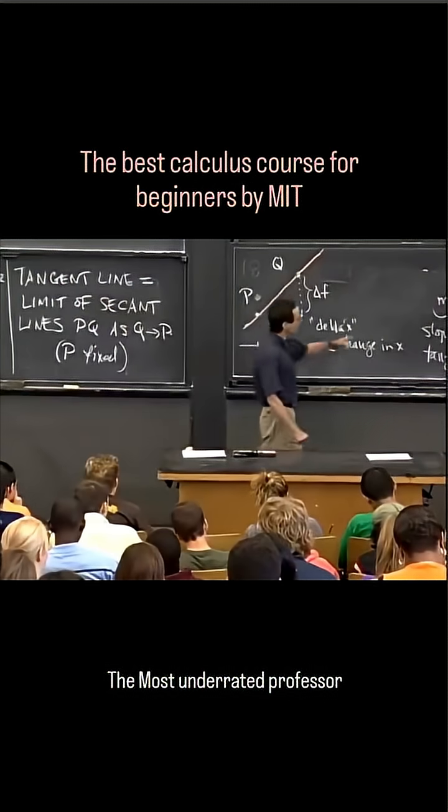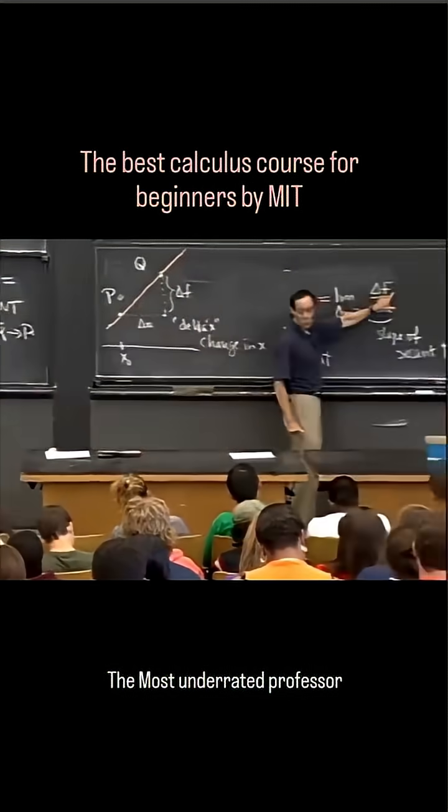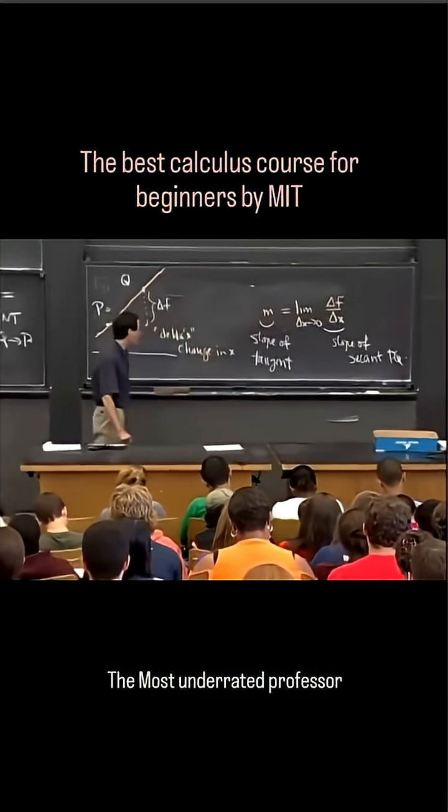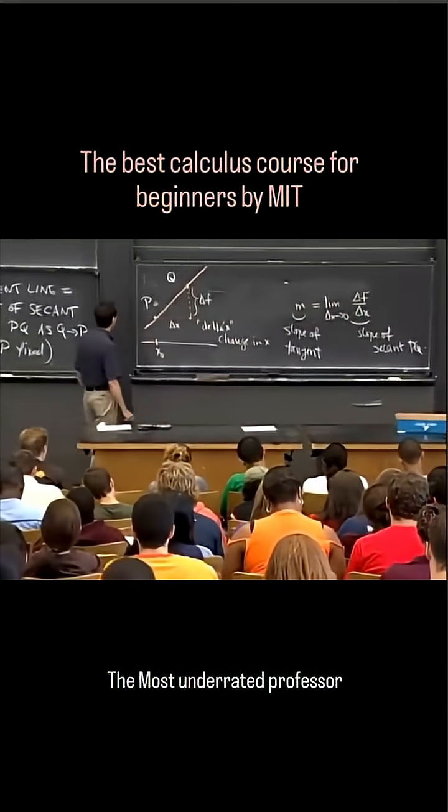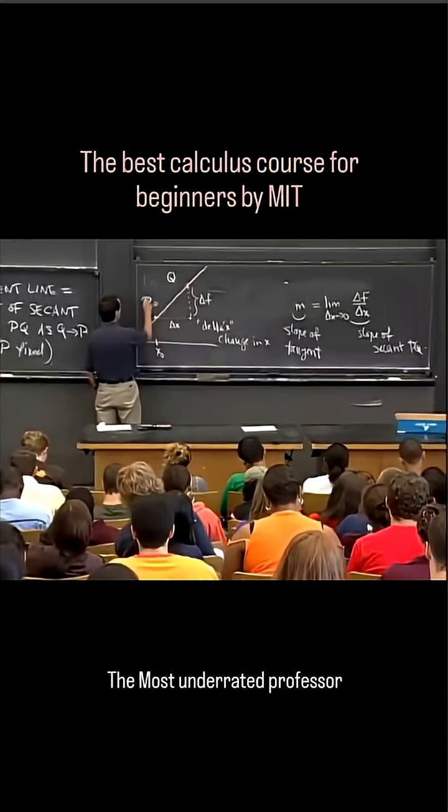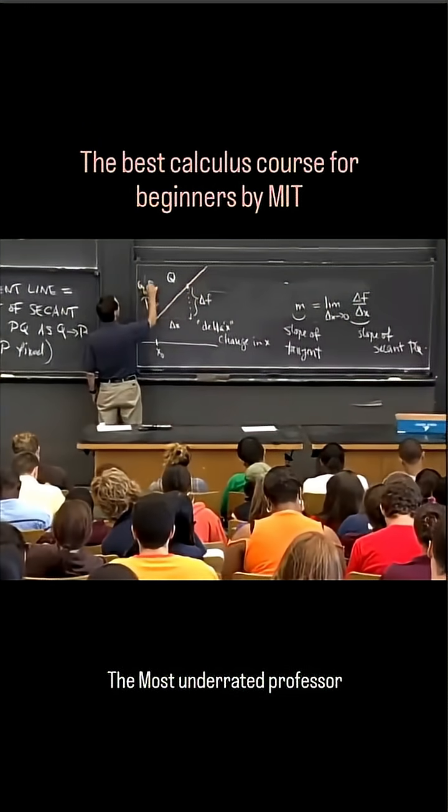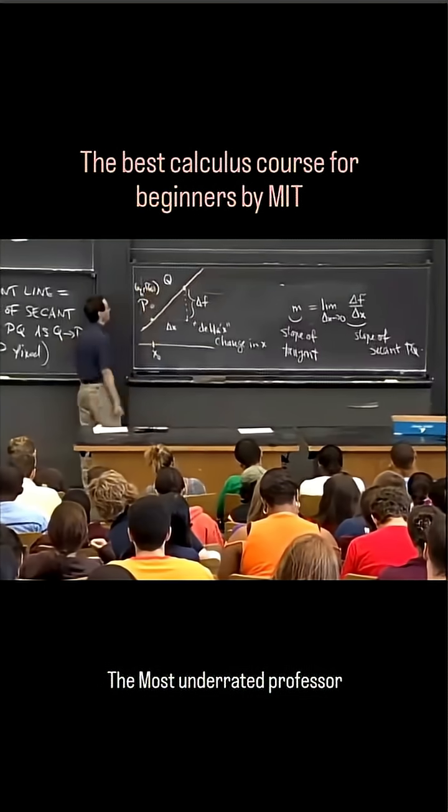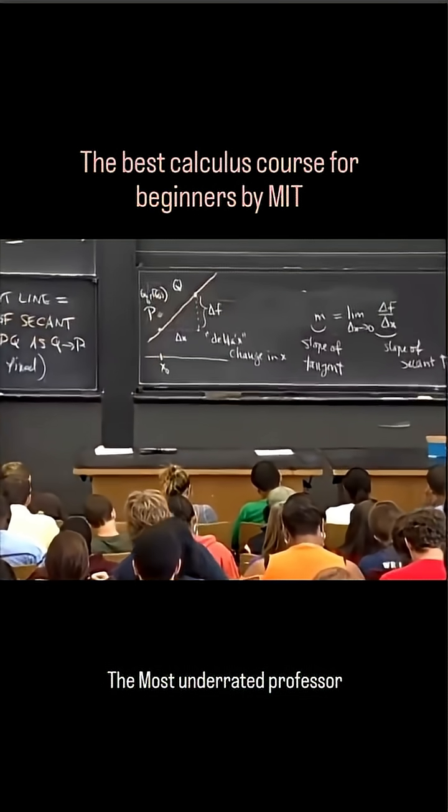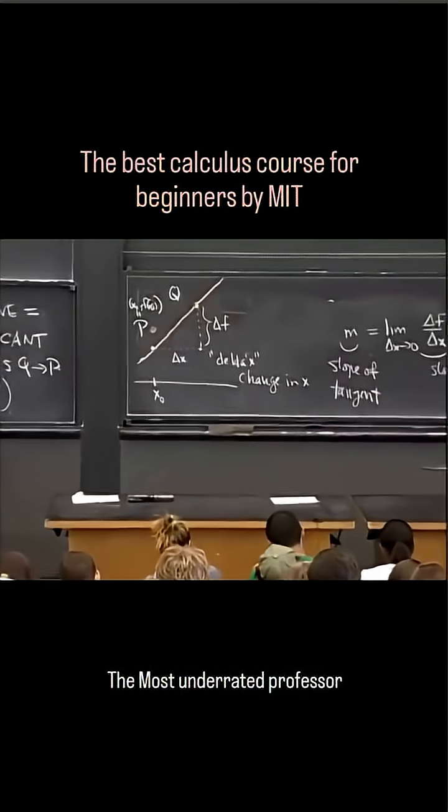I'm going to write delta f, the numerator, more explicitly here, the change in f. So remember that the point P is the point x0, f of x0. That's what we got from our formula for the point.